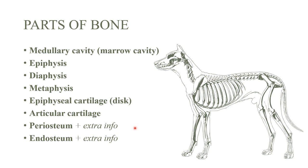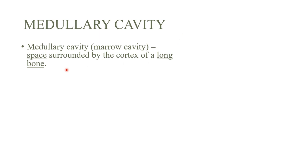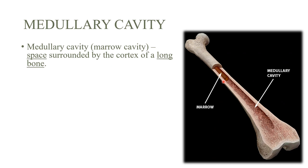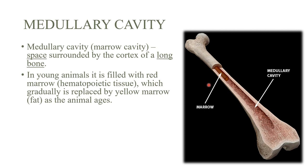The medullary cavity, or marrow cavity, is a space surrounded by the outer shell or cortex of the bone, found in long bones. It is simply a space where marrow is collected and kept safe. In young animals these cavities are filled with red marrow, and as the animal ages it gets replaced by yellow marrow, which is essentially fat.